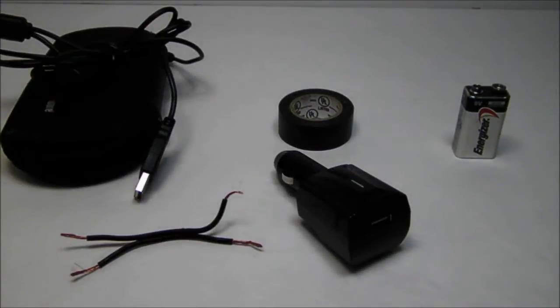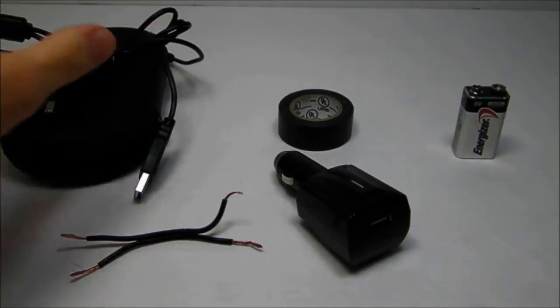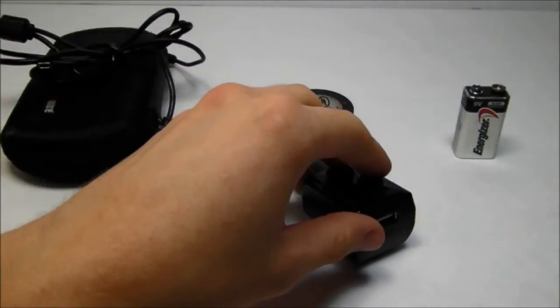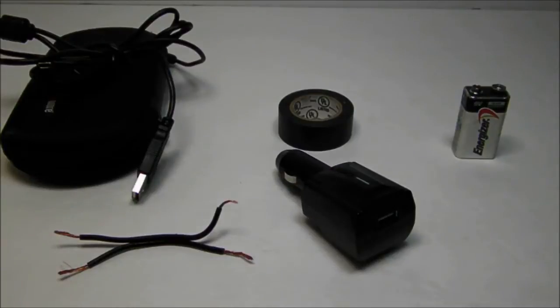How to make a portable USB cell phone charger. To do this, you're going to need something to charge, some wire, electrical tape, a 12-volt USB adapter, and a 9-volt battery.